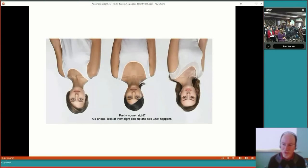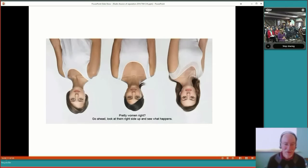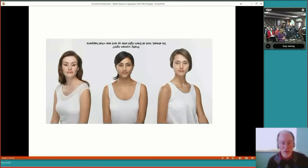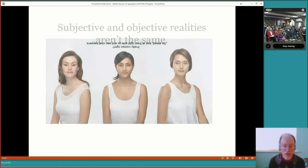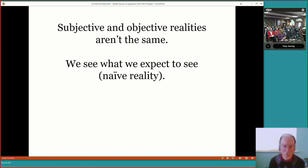Here's another example. These look like three perfectly normal women. And yet, if we turn it upside down, they're not so normal anymore. The reason this illusion works is because our brains are hardwired. And when you look at a face, you can very rapidly determine, is this human or not? And you're not looking at the details. And it's only when you flip the image and you can see the details, you realize that these faces are not quite right. This is known to occur in a specific portion of the brain, the fusiform gyrus. So we are not seeing the world the way it is. Subjective and objective realities aren't the same thing. We see what we expect to see. A philosopher might call this naive reality.